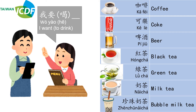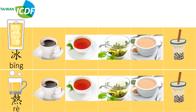You can see a table of beverages on the right: 咖啡 (coffee), 可乐 (cola), 啤酒 (beer), 红茶 (black tea), 绿茶 (green tea), 奶茶 (milk tea), 珍珠奶茶 (bubble milk tea). Now let's learn two words — 冰 (cold/iced) and 热 (hot) — to describe whether a beverage is hot or cold. For example: 冰咖啡, 冰红茶, 冰绿茶, 冰奶茶, 冰珍珠奶茶; 热咖啡, 热红茶, 热绿茶, 热奶茶, 热珍珠奶茶. You can pause the video if you'd like to practice.